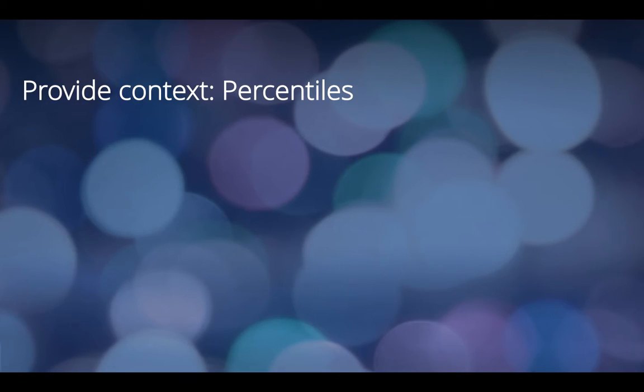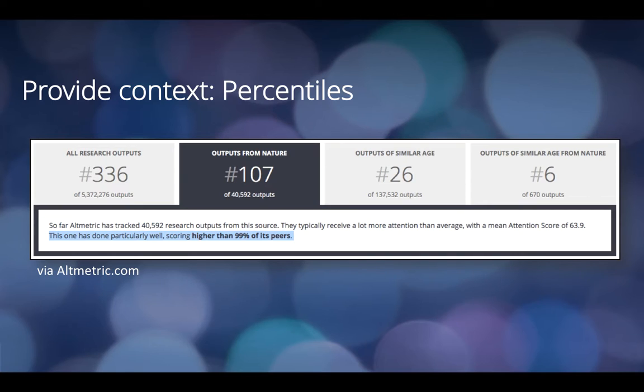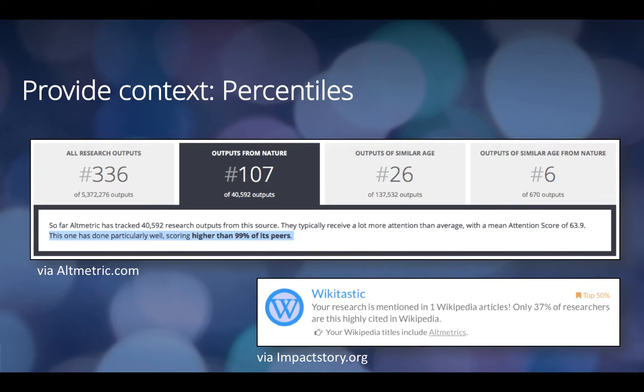You can provide context by using percentiles to explain how metrics for your research compares to metrics for other research published in the same journal or in the same year. This helps other people know if, say, the number of Wikipedia references to your articles is a lot or a little.